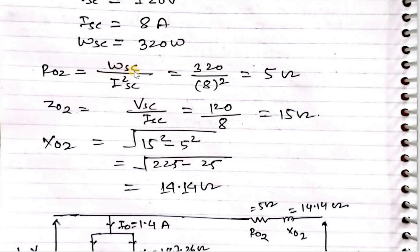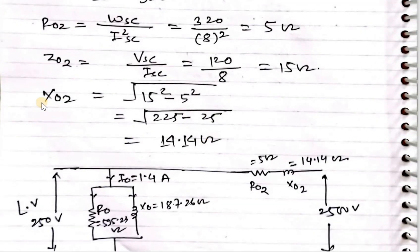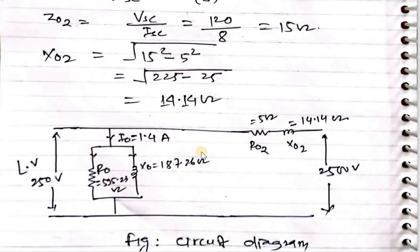120 upon 8 square, that is 5 ohm. Z02 equals Vsc upon Isc, that is 120 upon 8, 15 ohm. And X02 equals square root of Z02 square minus R02 square, that is 225 minus 25, that is 14.14 ohm.